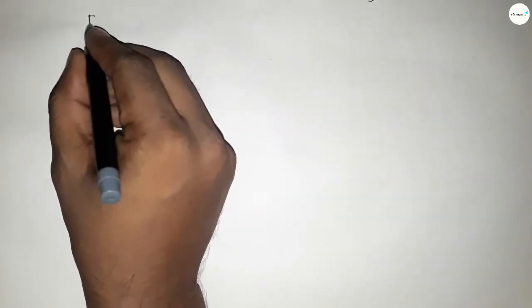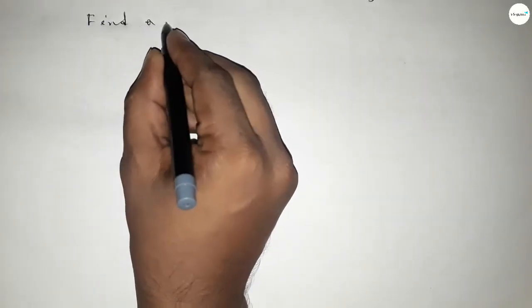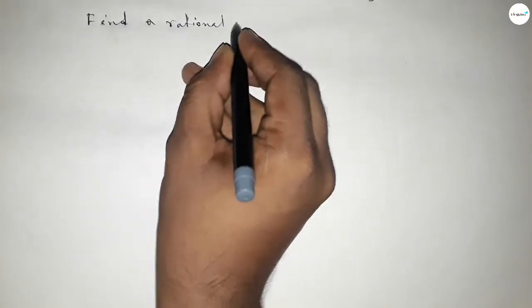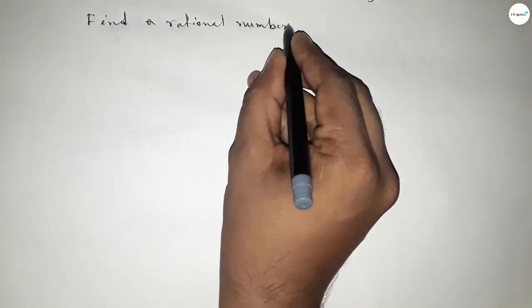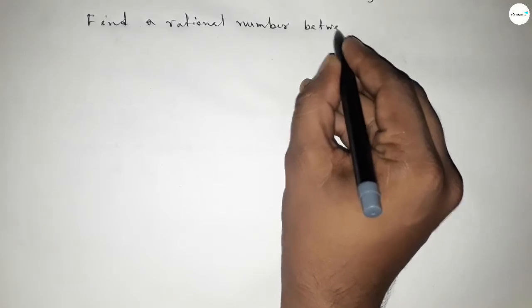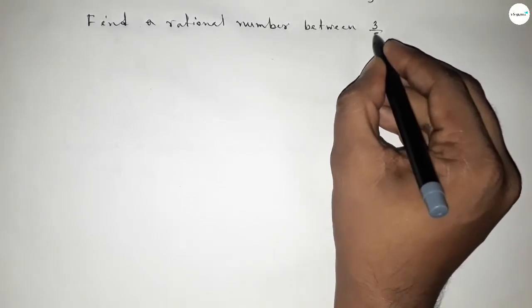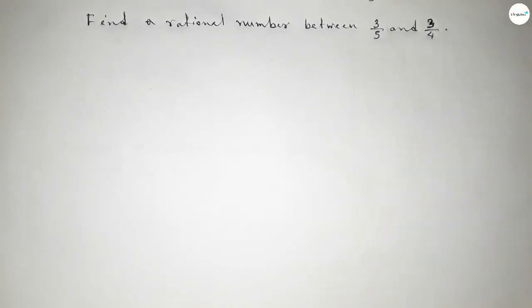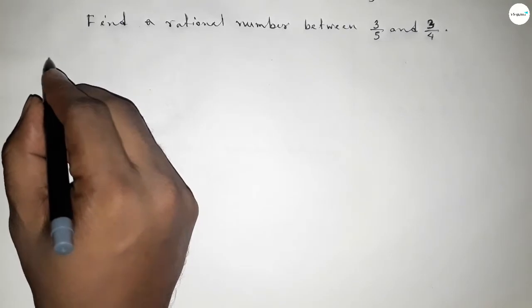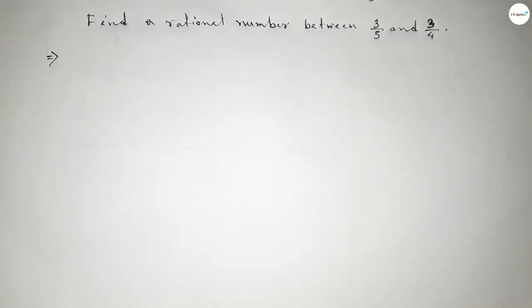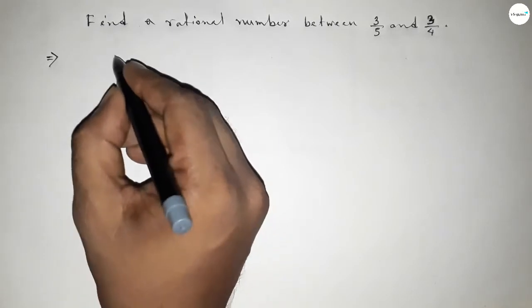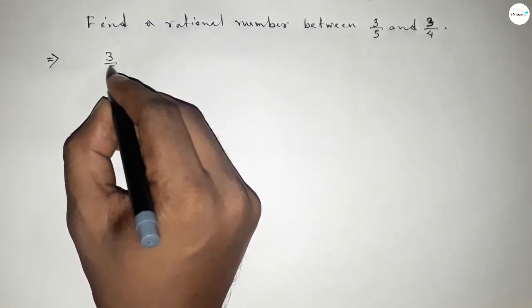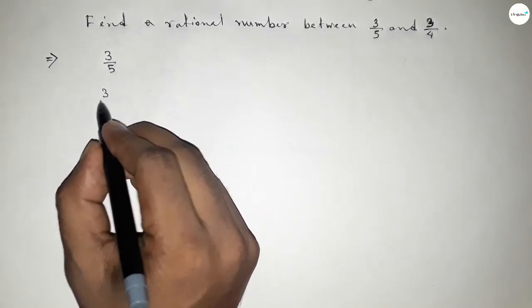Hi everyone, welcome to SHJR classes. Today in this video we have to find a rational number between 3 over 5 and 3 over 4. So finding a rational number, let's start the video. First of all, write down here the given number 3 over 5 and 3 over 4.